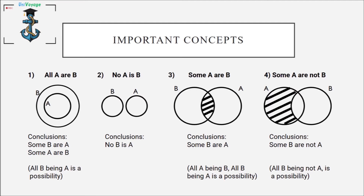Also, all A being B and all B being A is a possibility. When we compare case one and case three, we can say that when it is true for all it has to be true for some, but if it is true for some it may or may not be true for all. The fourth case, 'some A are not B,' is a bit tricky.